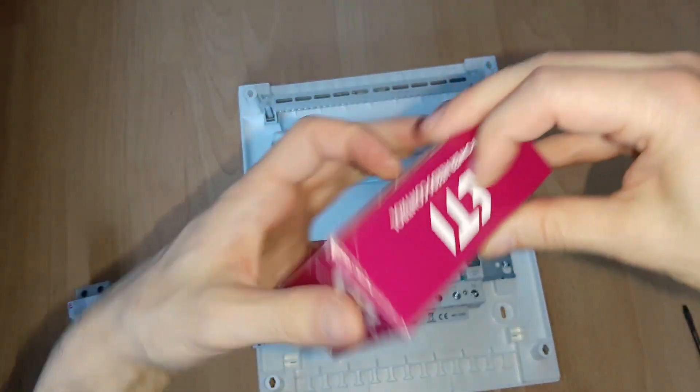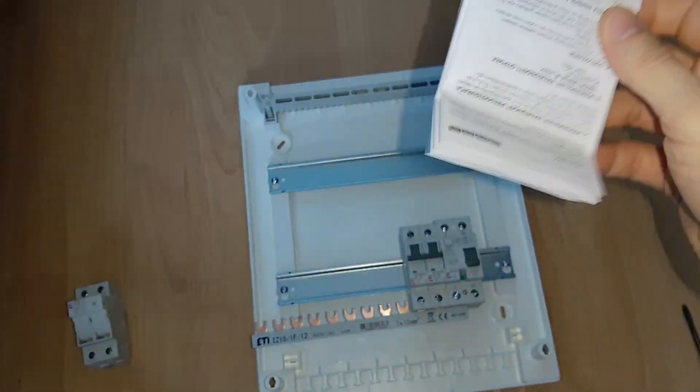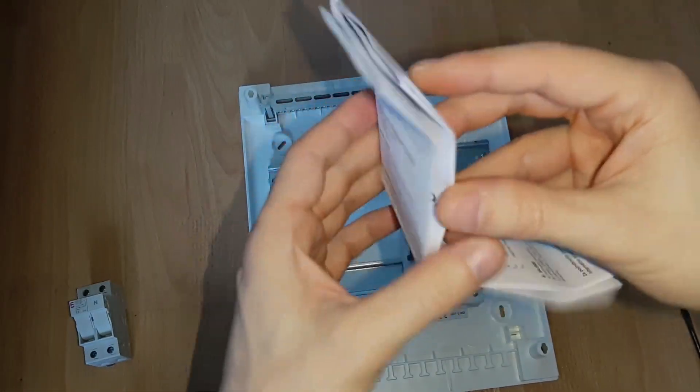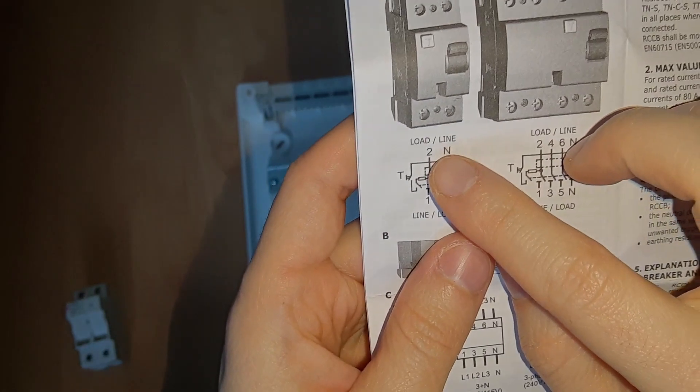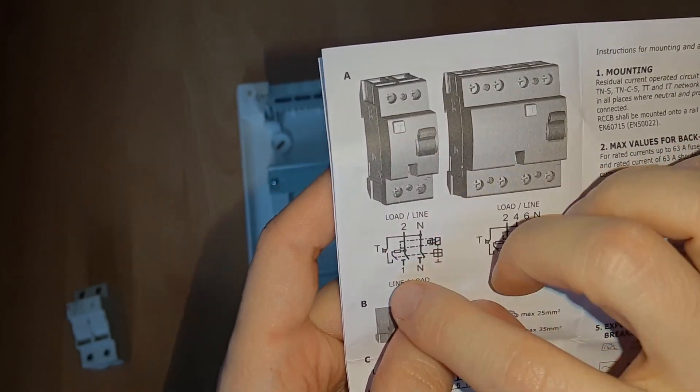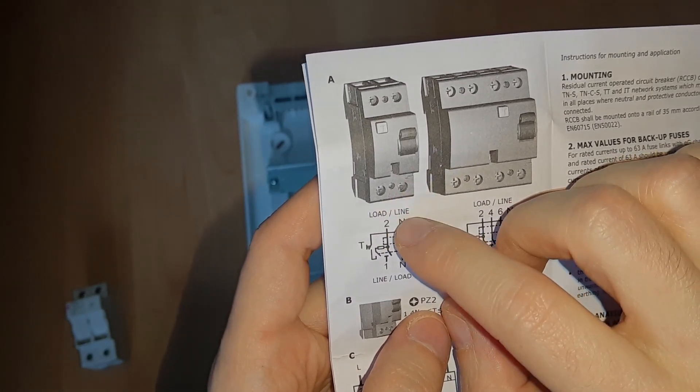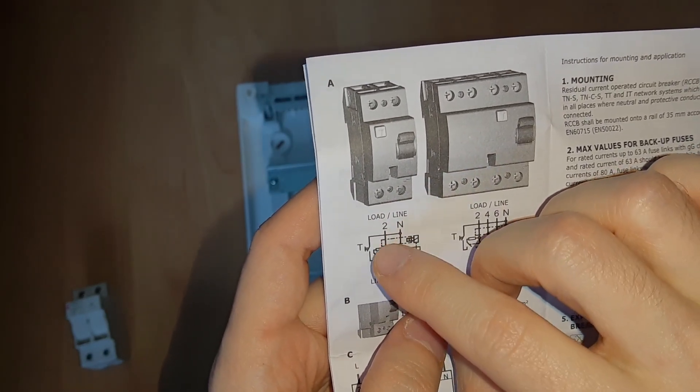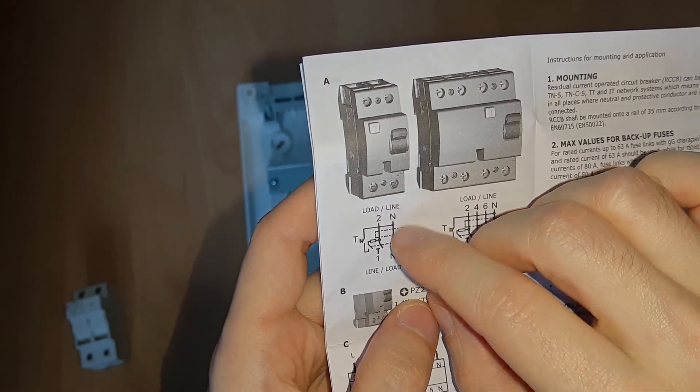So as you can see, you should make the connection on the bottom. I have the instructions for the differential here in case you're wondering whether you should make the connection on the bottom or the top. It says load, line, line, load. So you can put it either way, either from the top the line or from the bottom. You either put the line down and the load up, or the line up and the load down.